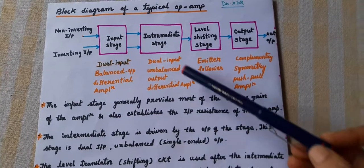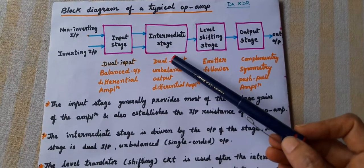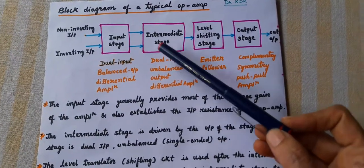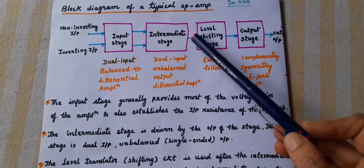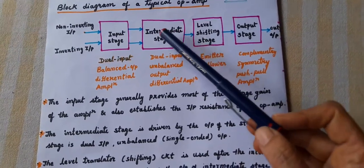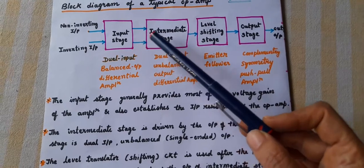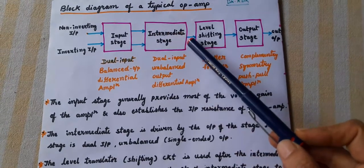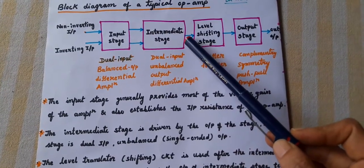What is the intermediate stage comprising of? It is a dual input, single-ended output, so we call it a dual input unbalanced output differential amplifier.